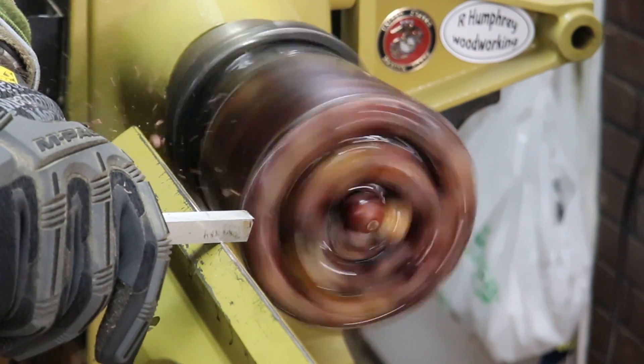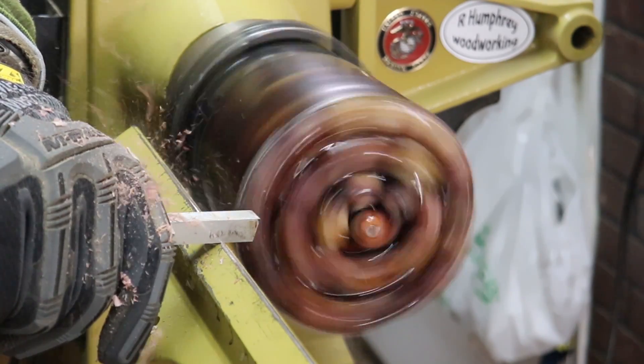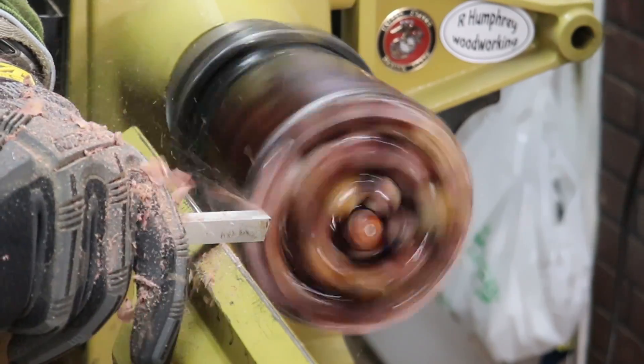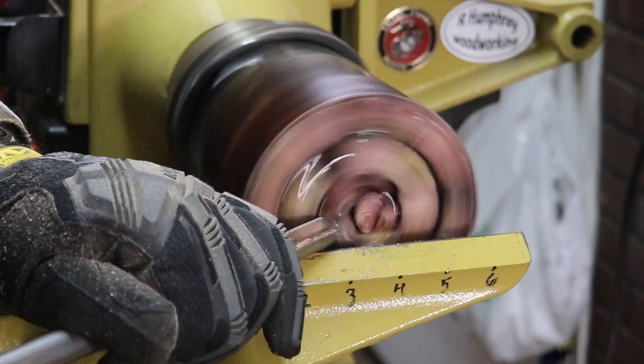So this is ultimately going to be the top of the vessel. And I'm just making it flat. And I'm going to bore out the middle so that I can reverse mount this and work on the base and the outside.